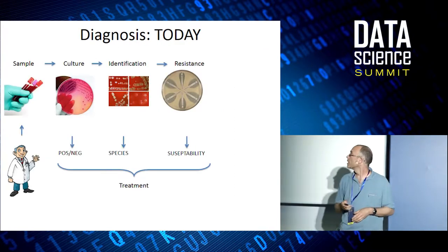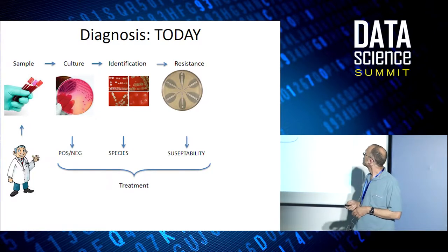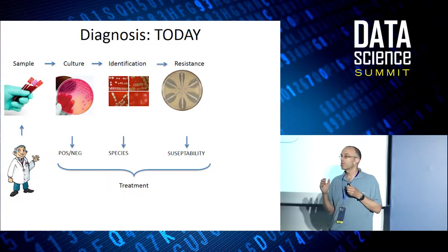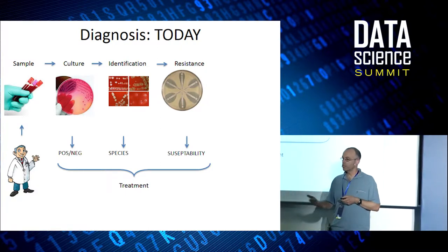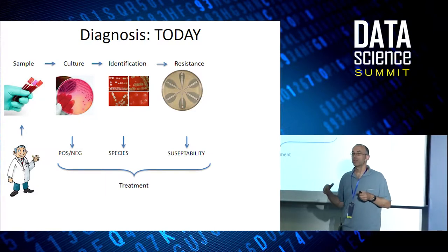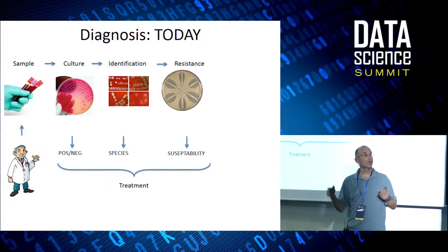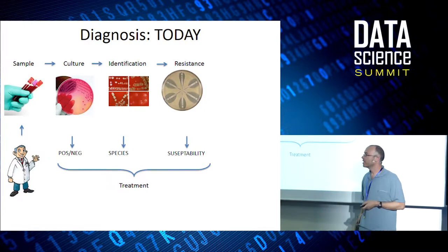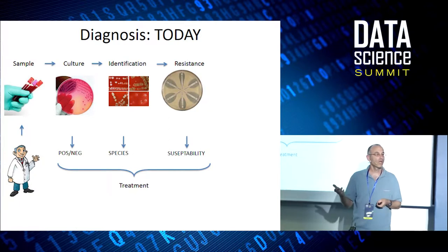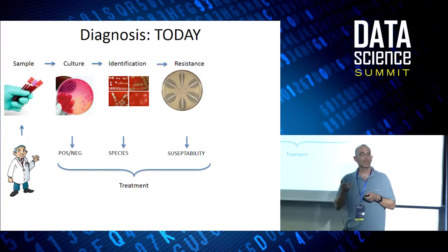So how does diagnostics look like today? Mostly it's what we call culture-based. If I have an infection — say in the urine — I go to the physician and give a sample. That sample goes to the clinical lab. The physician does a culture: we give some food to the bacteria, they grow, it takes time, we wait, and then we throw different antibiotics on the bacteria and see if it kills them or not. That information comes back to the physician.